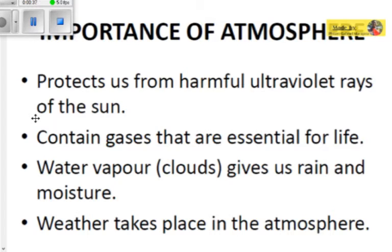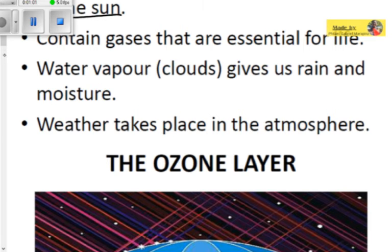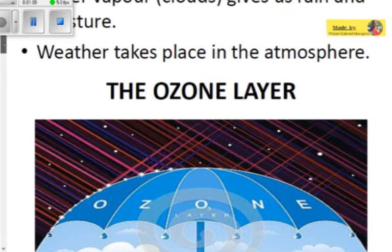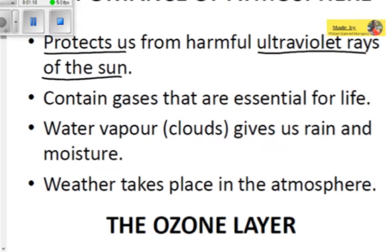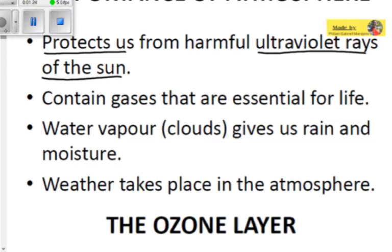The atmosphere protects us — that's the main point. It protects us from the harmful ultraviolet rays from the sun. The sun releases ultraviolet rays and those ultraviolet rays are definitely not good for us, so the atmosphere is needed. It also contains gases that are essential for life. These gases are needed for us to live and can be found contained within the atmosphere.